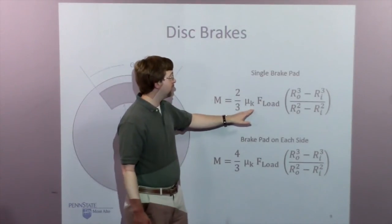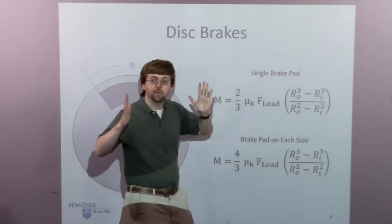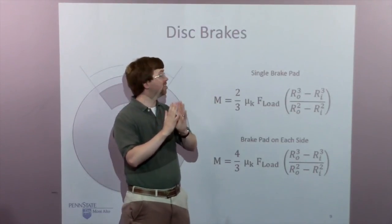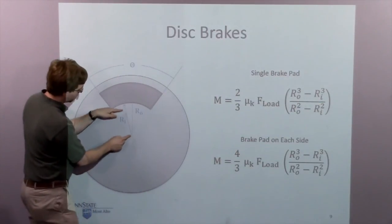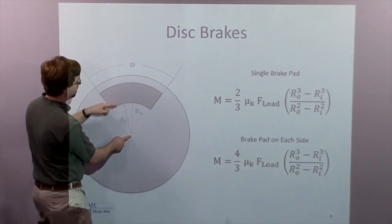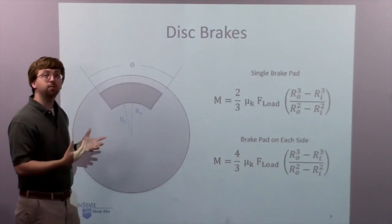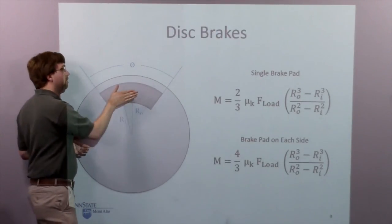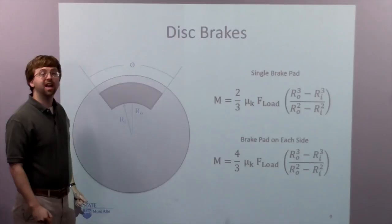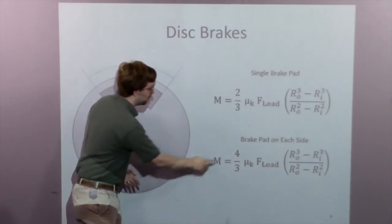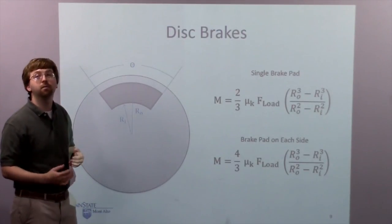The load force F is the force with which the brake pad is pressed into the rotor, and R_outer and R_inner are the radii from the center of rotation to the outside and inside of the brake pad. Usually disc brakes have a pad on both sides — one pressing in from the front and one from the back, clamping together. In that case, simply multiply the equation by two to find the total torque or stopping power of the brakes.